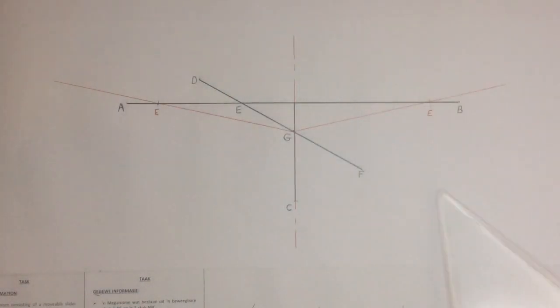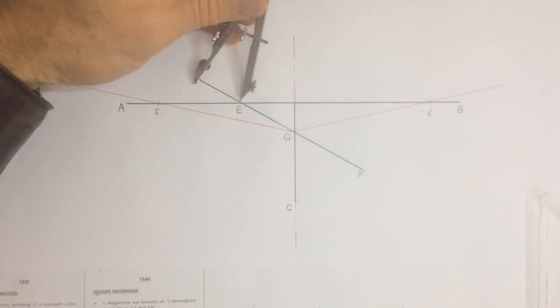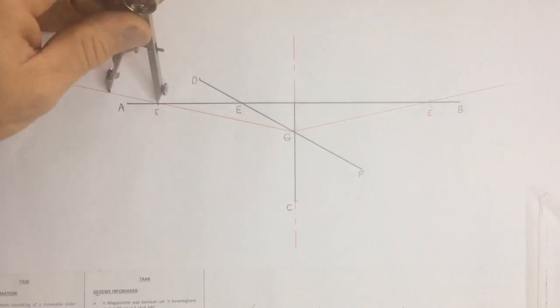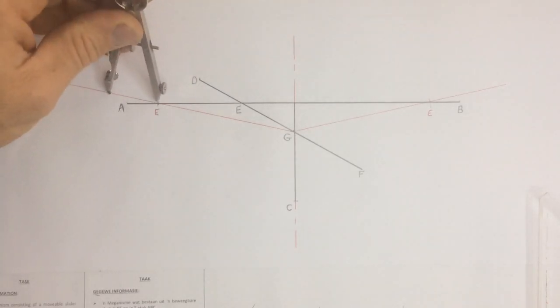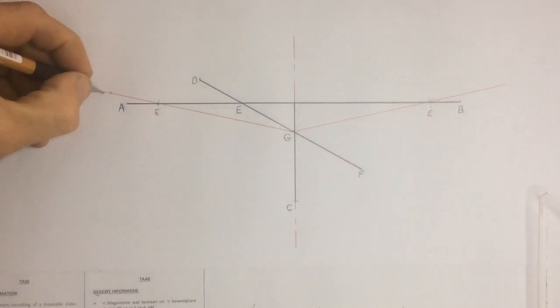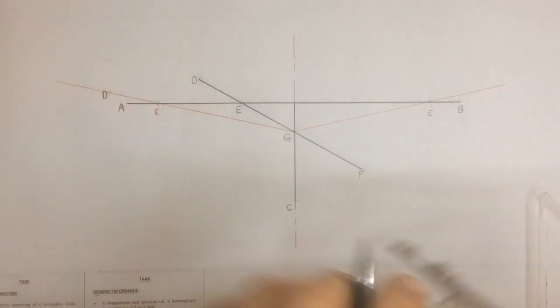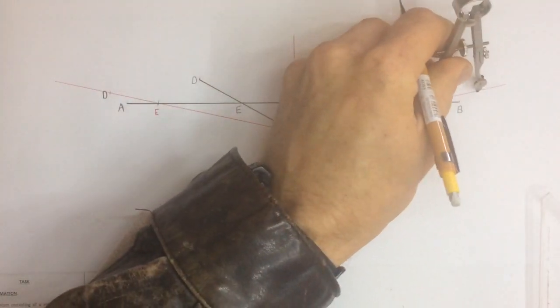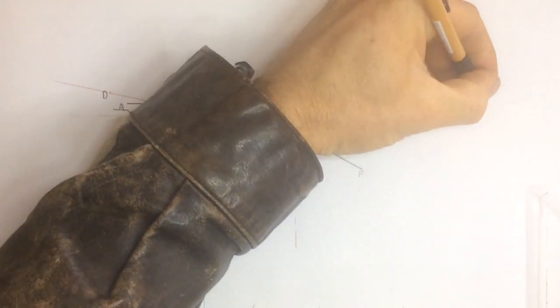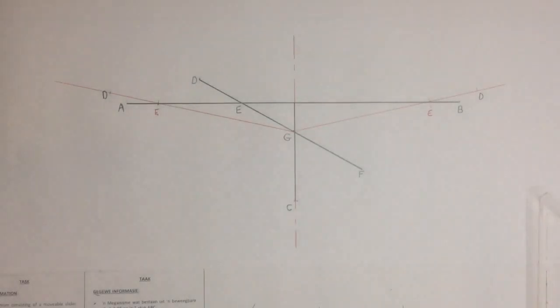Then I'm going to take this measurement DE, go to my new E positions, and mark off where D is going to go — on this side and over there. So that's the furthest point that D is going to be able to get to.